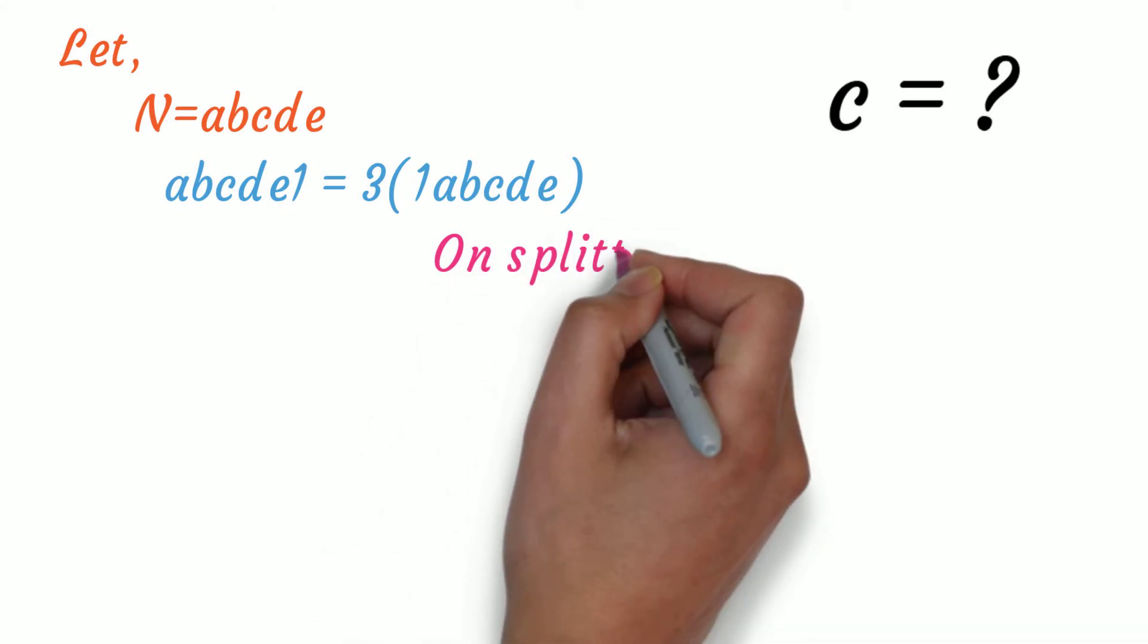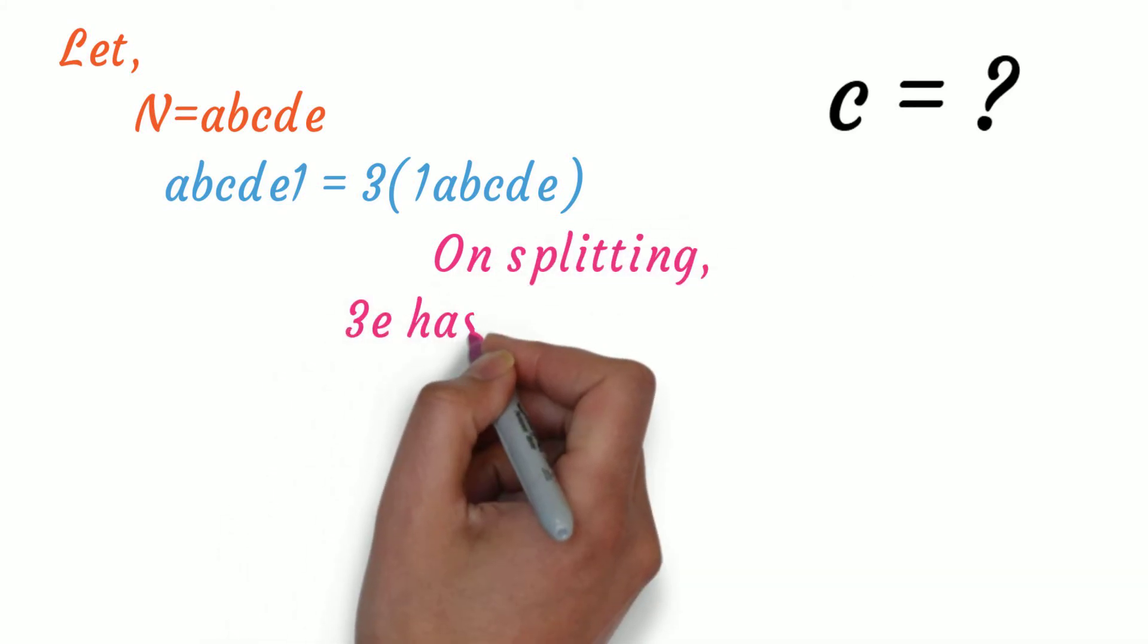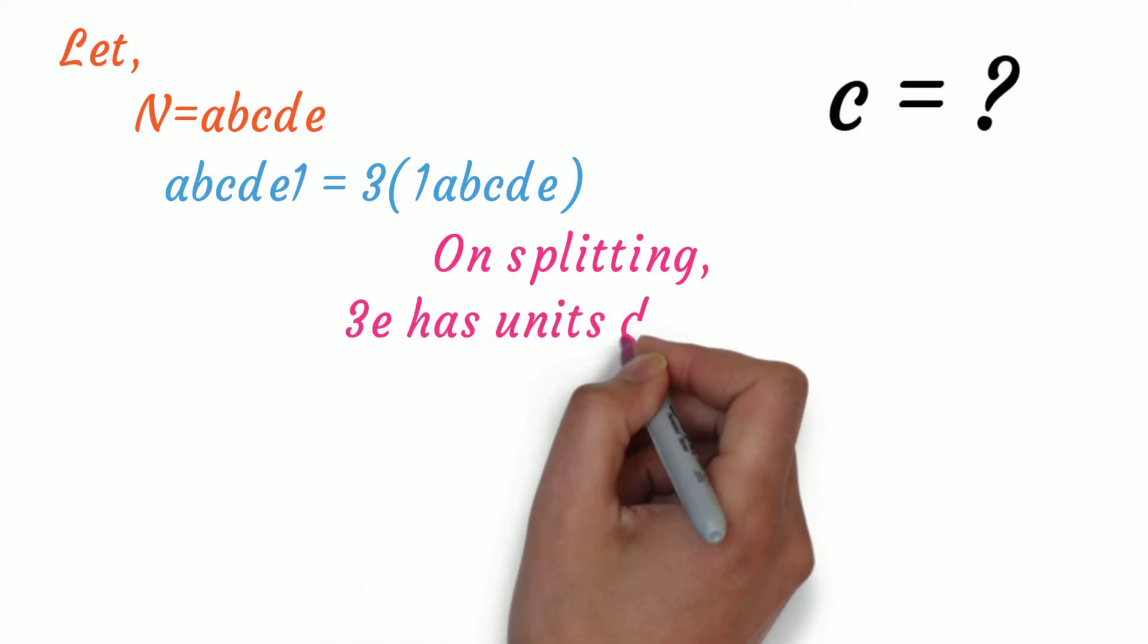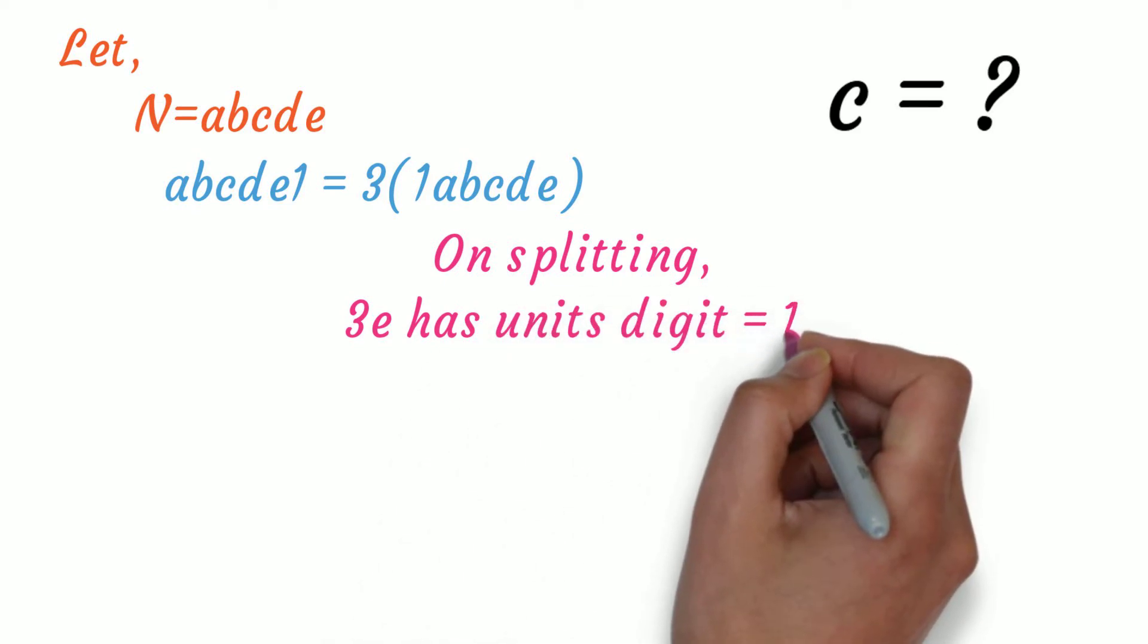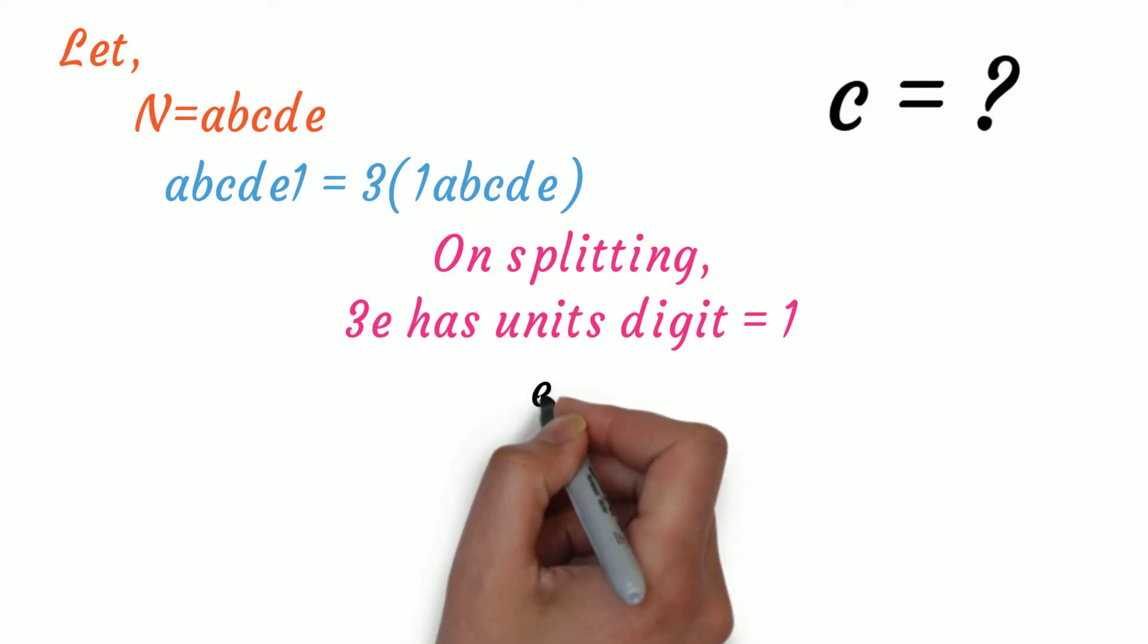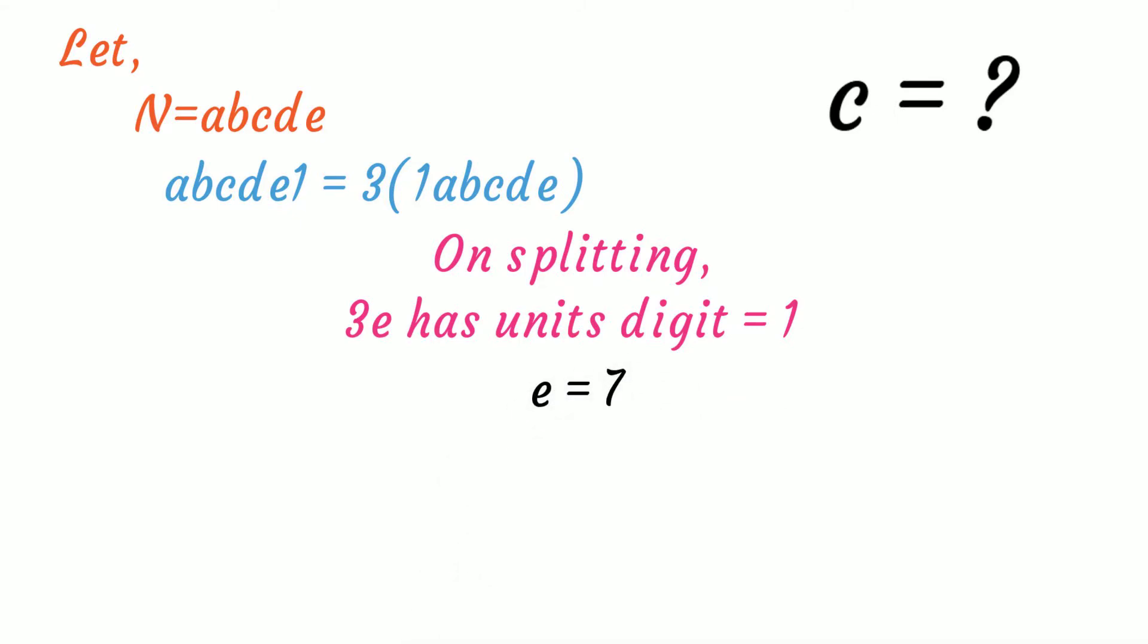Now, multiplying on the right-hand side, we find 3 times e must leave a unit digit of 1. And e equal to 7 is the only number that gives such a unit digit.